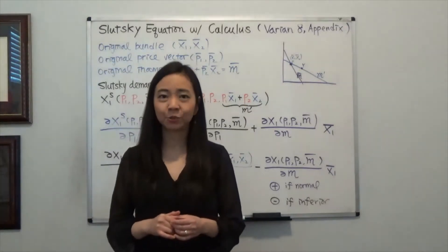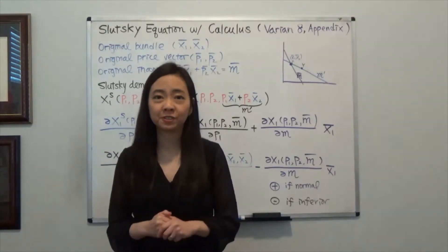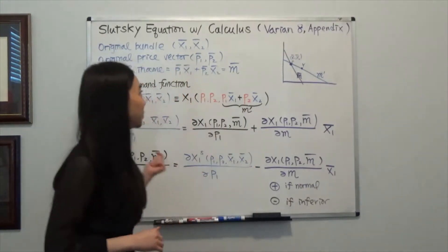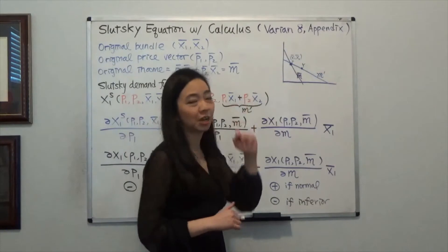Hello everyone, my name is Iris Franz with Johnny One Room. Today we are going to study Slutsky equation with calculus and this is from Varian Chapter 8 Appendix.